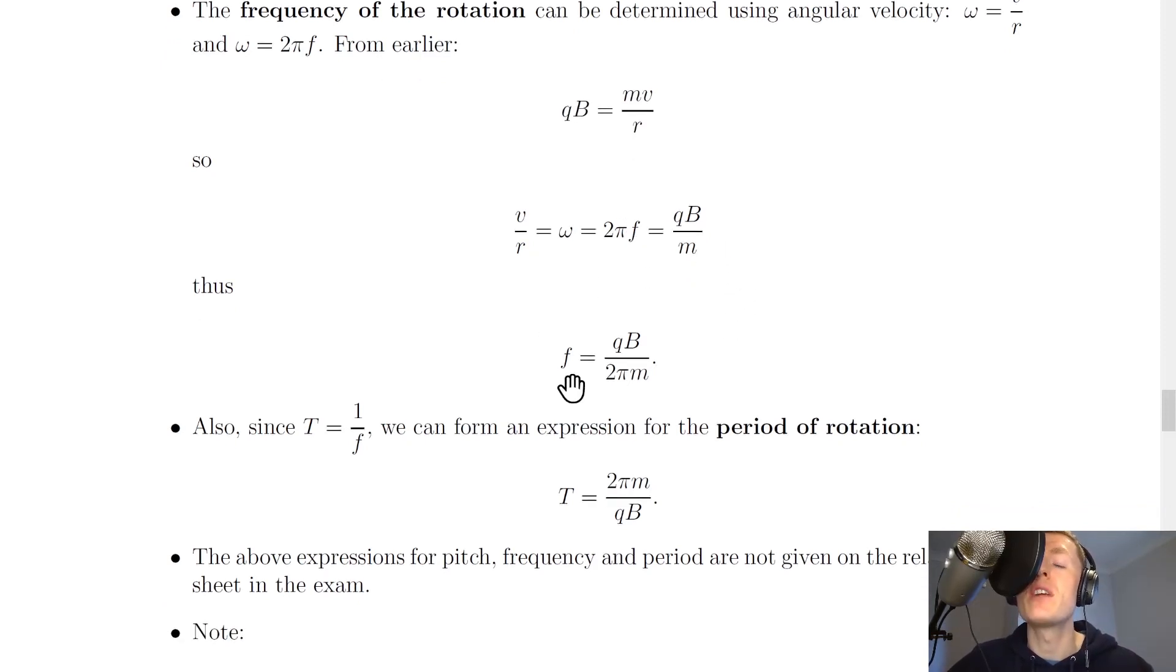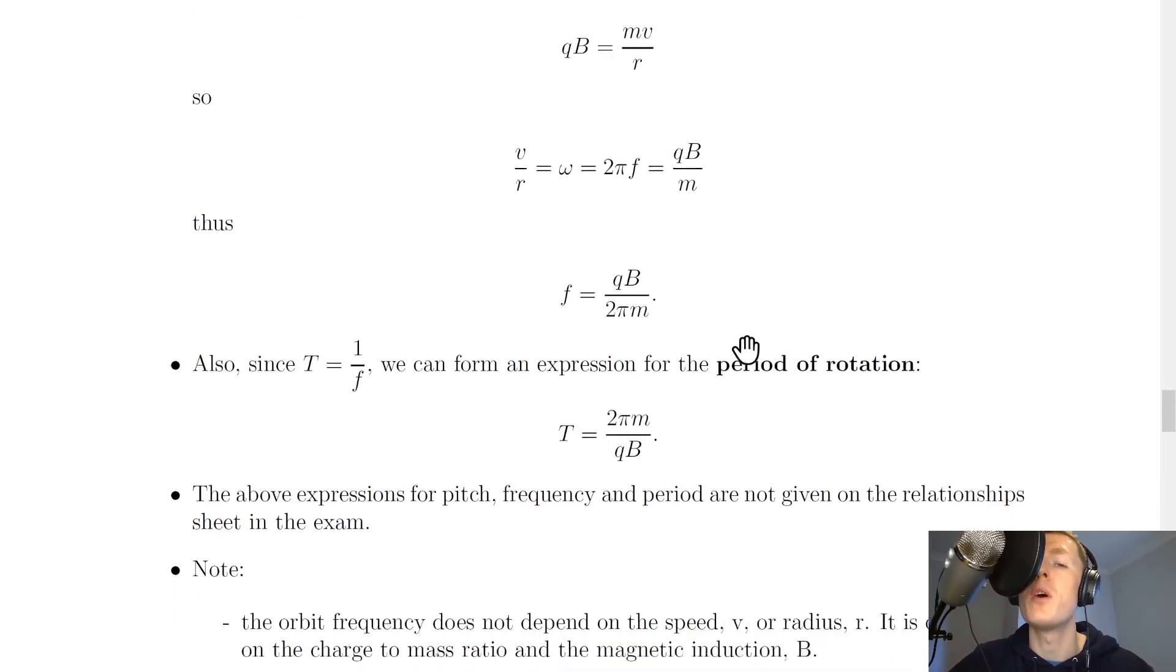And now we've got frequency in our expression, which is what we want. So if we divide both sides by 2 pi here, this 2 pi comes underneath, and we get f equals qB over 2 pi m. So we can now find the frequency of the rotation. And also, since the period is equal to 1 over frequency, we can also form an expression for the period of rotation T. So because T is equal to 1 over f, to get 1 over f here, we can just do 1 over this side, which actually just flips the numerator and denominator of the fraction. So this becomes T equals 2 pi m over qB.